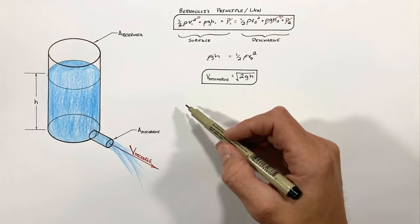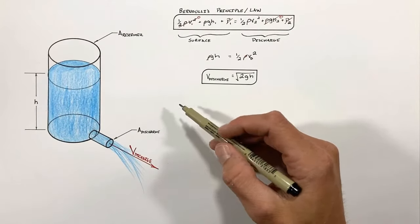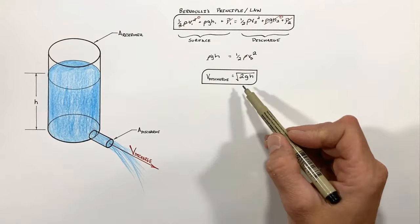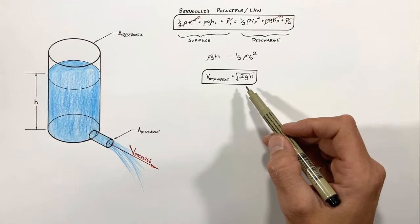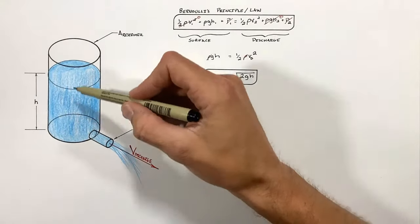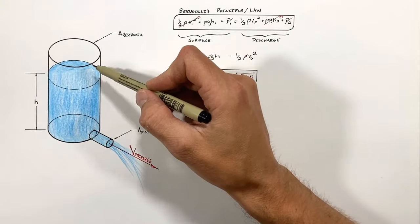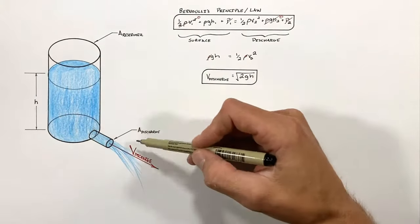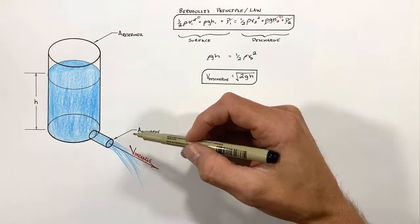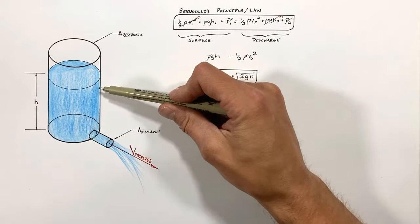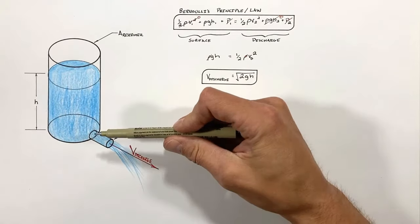Welcome back to Integral Physics. In the previous video, I worked out the discharge velocity of fluid from a reservoir as a function of the fluid height within the tank. In this video, we're going to calculate the time it will take for the entire tank to drain.